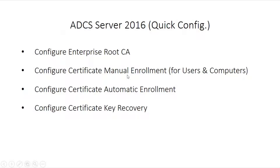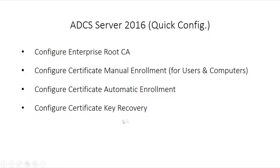Hello friends, welcome to this video. Here I'll be showing you a quick configuration on the ADCS on Windows Server 2016. We'll be configuring the enterprise root CA, then move on to manual enrollment for users and computers for secured communication and data encryption. We'll also look at configuring certificate auto-enrollment and key recovery in case a certificate is lost.